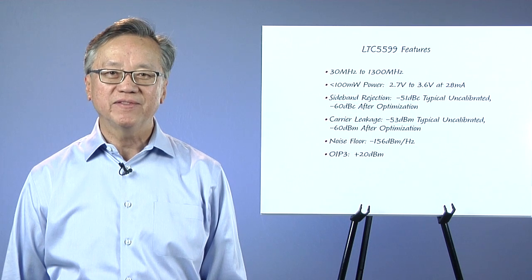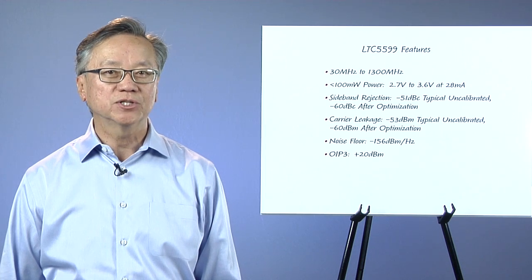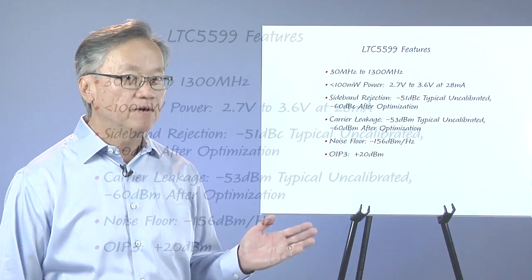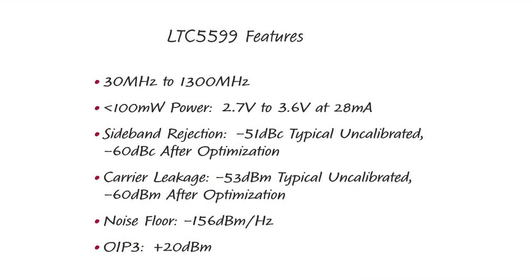The LTC5599 modulator operates over a wide frequency range from 30 MHz to 1.3 GHz. At less than 100 mW consumption, it is the lowest power modulator of its class in the market, with no trade-off in performance.